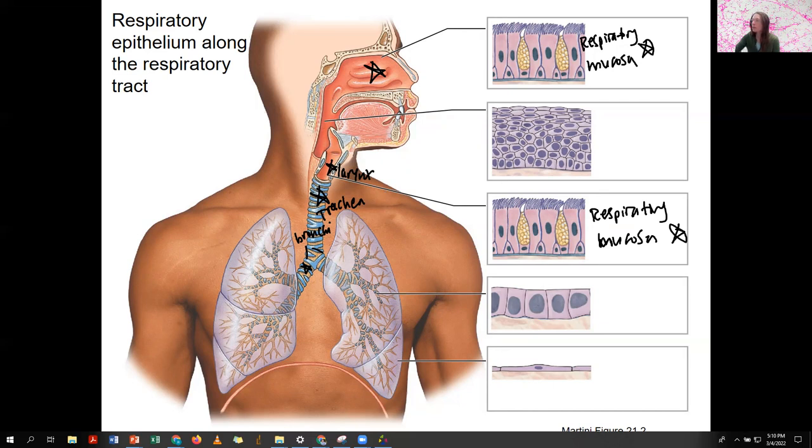If food goes there, we don't want it to be respiratory mucosa. Instead, we want stratified squamous. Why? Protection. You already know, I'll put a purple star for this, the esophagus is stratified squamous.